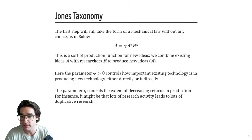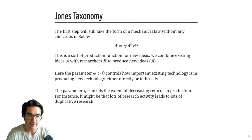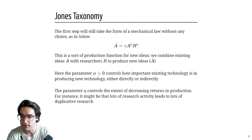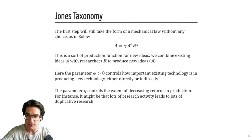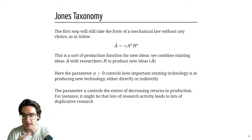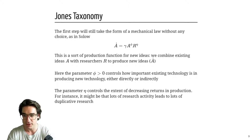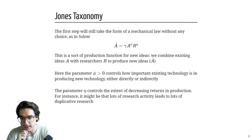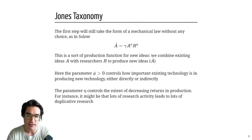R is pretty standard — you put in a certain amount of researchers and get out some product, like a regular production function. η (eta), which you'd expect to be between zero and one to make it a concave function, controls how much decreasing returns you have. It won't necessarily be the case that if you double the number of researchers, you get twice as many ideas.